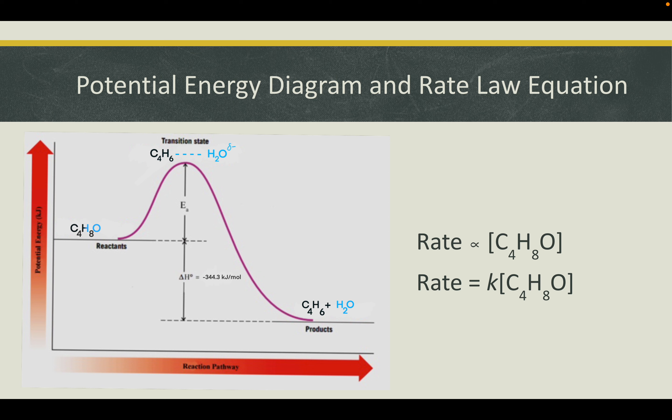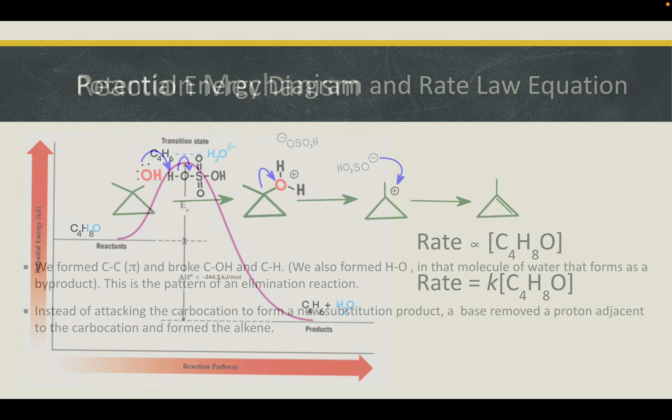Here is our potential energy diagram and rate law to help us visualize this reaction. Because there is only one step, our reactants become our rate-determining step, since it is the only step. C₄H₈O is our 1-methylcyclopropanol. Let's take a closer look at what's happening in this transition state, which results in our products of C₄H₆ and H₂O, or 1-methylcyclopropene and water, in our reaction mechanism.